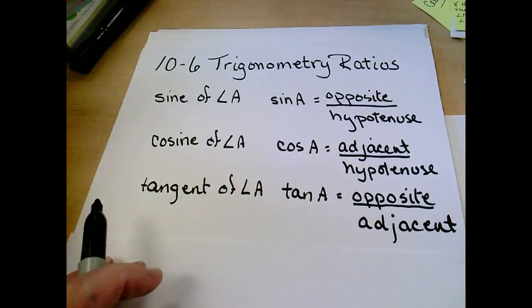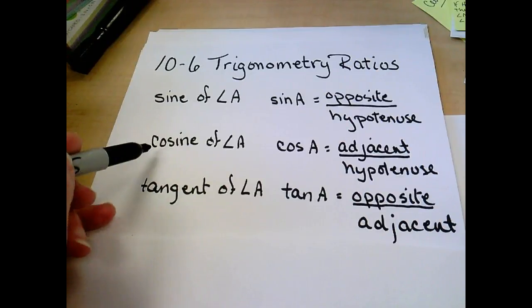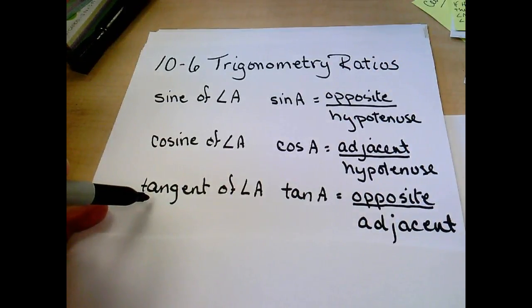10-6 trigonometry ratios. Sine, cosine, and tangent are the three trig ratios we're going to be using.